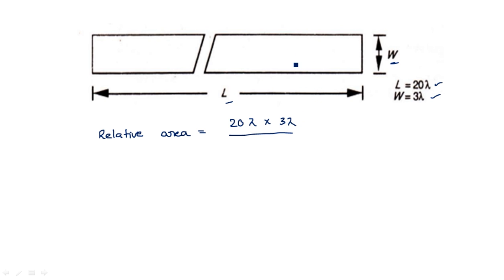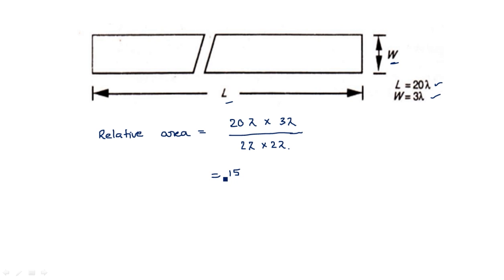The relative area is equal to the actual area — 20 lambda into 3 lambda — divided by the standard unit area, which is 2 lambda by 2 lambda. For any material, the standard unit assumes L equal to W equal to 2 lambda, because for a feature size we generally consider 2 lambda. So we calculate the area relative to this standard unit. The result is approximately 15 — so the relative area is 15.